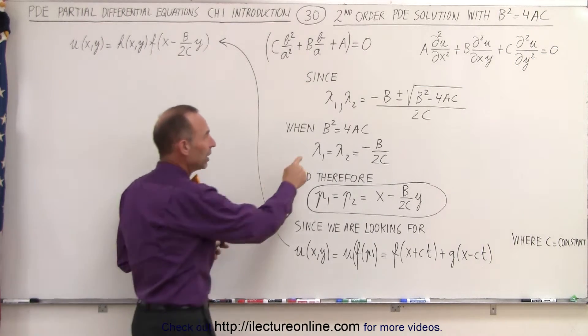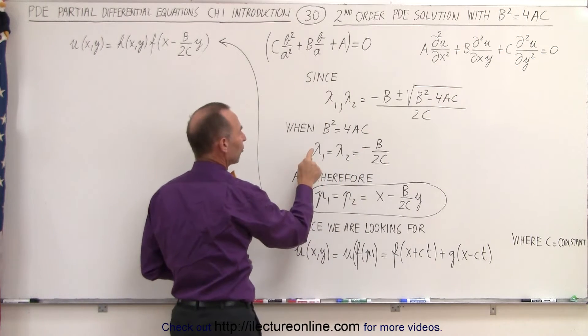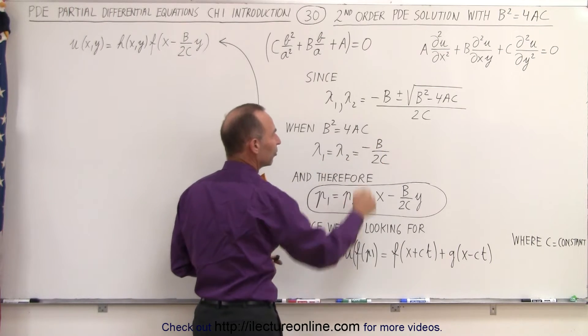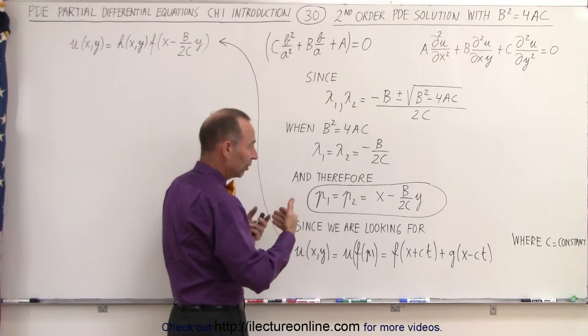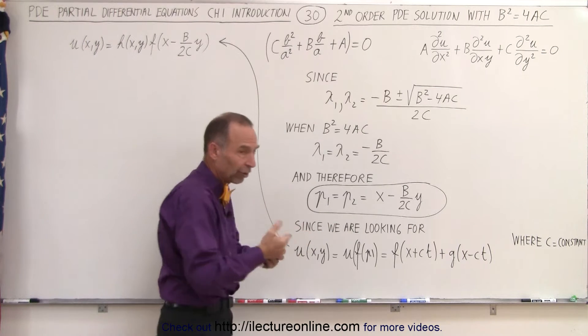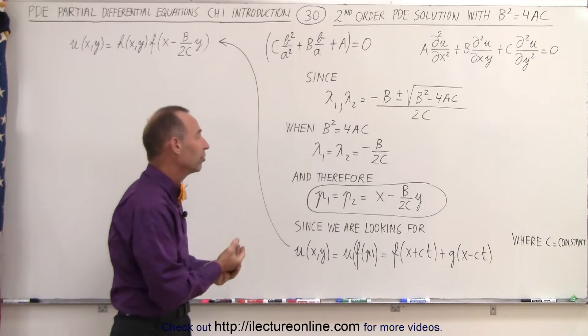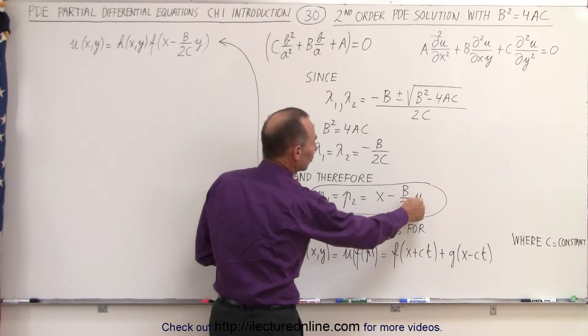But when b² equals 4ac and this goes to zero, we realize we only have one solution: λ₁ therefore equals λ₂ equals minus b over 2c. And therefore the two equations, p₁ and p₂, which are linear equations of x and y, then actually are the same equation: p₁ equals p₂ equals x minus b over 2c times y.